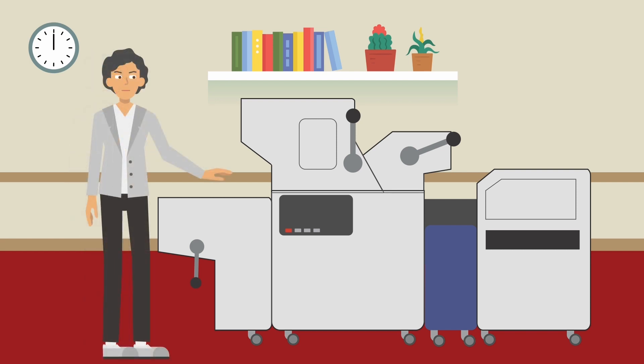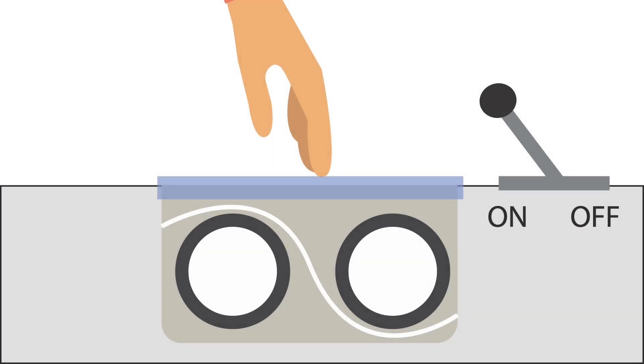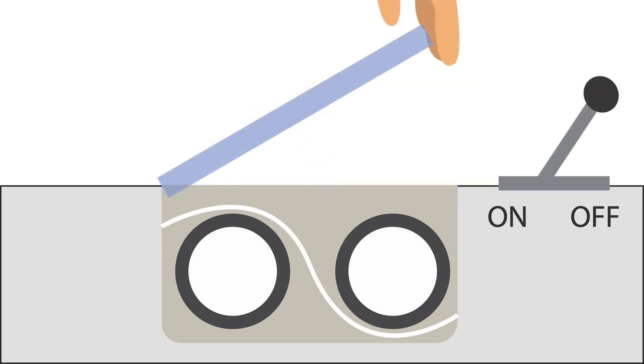As part of her job, Jones had to adjust the wheels that ejected paper from the press after every print job. When the press left Ryobi, it was equipped with a plastic guard that prevented an operator from reaching in and adjusting the eject wheels while the press was running and with a switch that automatically shut off the press if the guard was opened.